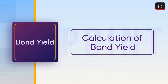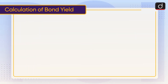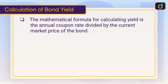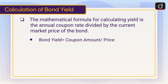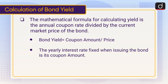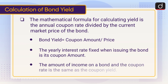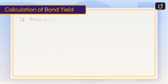Moving on to the calculation of bond yield. The mathematical formula for calculating yield is: annual coupon rate divided by the current market price of the bond. Bond yield equals coupon amount divided by price. The yearly interest rate fixed when issuing the bond is its coupon amount. Price and yield are inversely related.